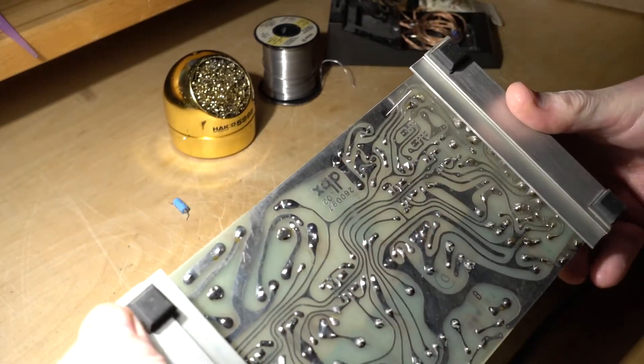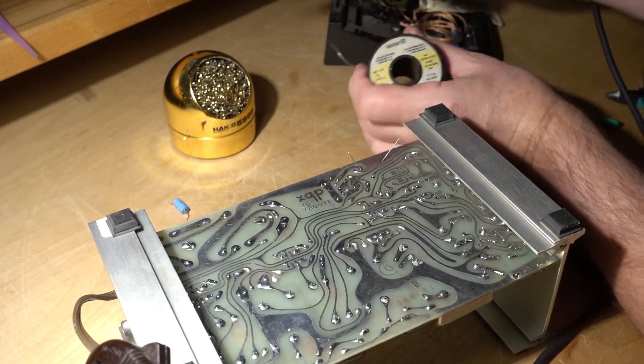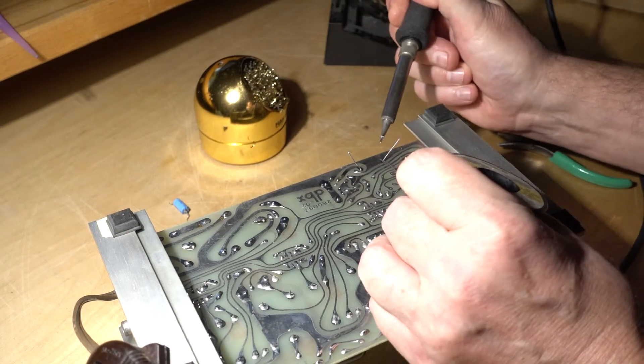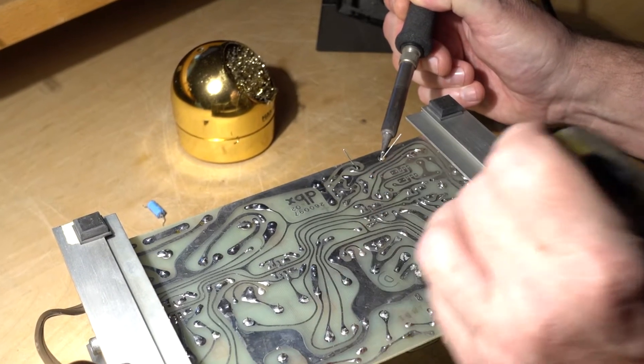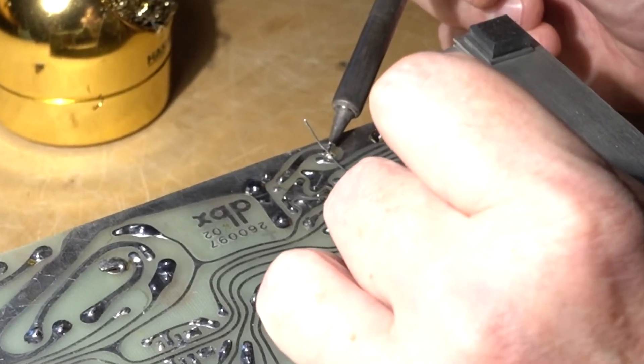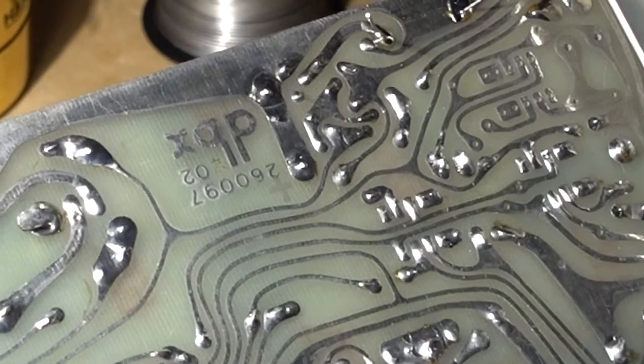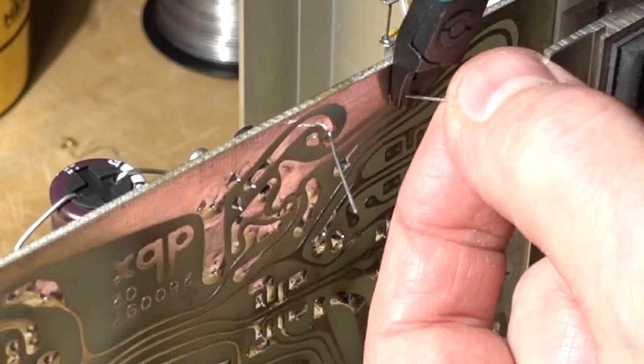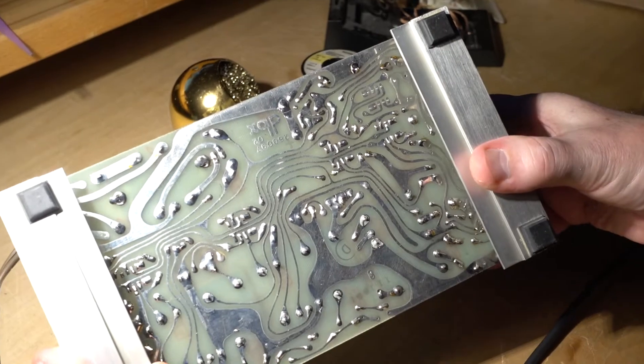And do the soldering job. Make sure that it heats up properly and the joint is shiny and nice looking. Trim the leads after that. And we're done. This one is in. Many more to go.